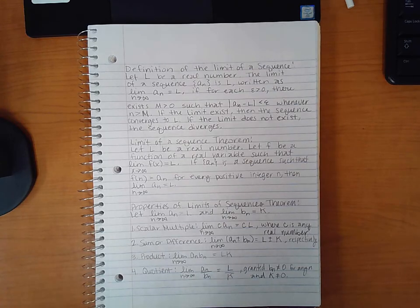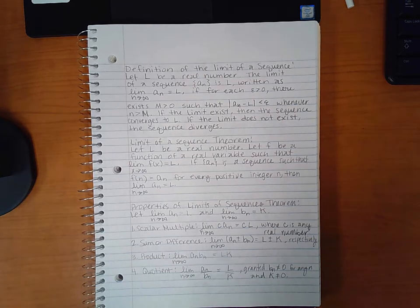Let L be any real number. The limit of a sequence, a_n, is L, and it's written as the limit of the nth term equal to L. If for each epsilon greater than 0, there exists an M such that a_n minus L is less than epsilon whenever n is greater than M. If the limit exists, then the sequence converges to L. If the limit does not exist, then the sequence diverges.